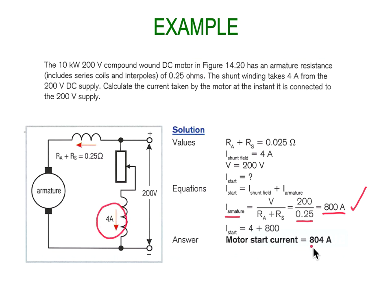Adding the shunt field current of 4 amps to the 800 amps armature current gives us a total start current of 800 amps. So to get this 10 kilowatt motor up and running takes 800 amps at start, before any back EMF has initialized and reduced our current. That's going to take a fair bit of thinking about.